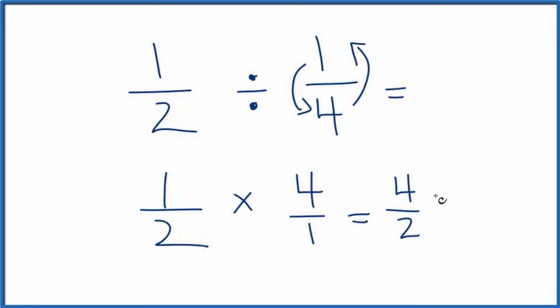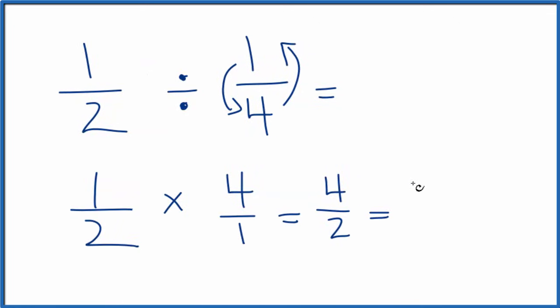So we have 4 halves. Divide both sides by 2. 2 goes into 4 twice. 2 goes into 2 just once and that equals 2.